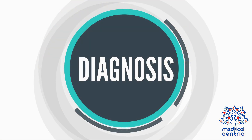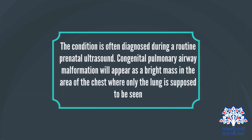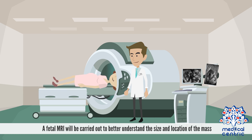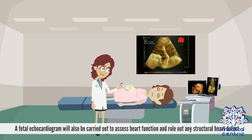The condition is often diagnosed during a routine prenatal ultrasound. Congenital pulmonary airway malformation will appear as a bright mass in the area of the chest, where only the lung is supposed to be seen. To confirm the diagnosis, a fetal MRI will be carried out to better understand the size and location of the mass. A fetal echocardiogram will also be carried out to assess heart function and rule out any structural heart defect.